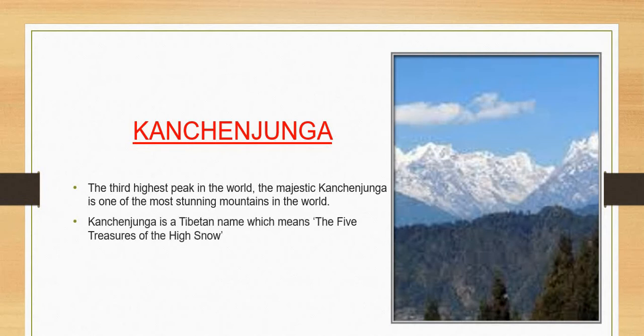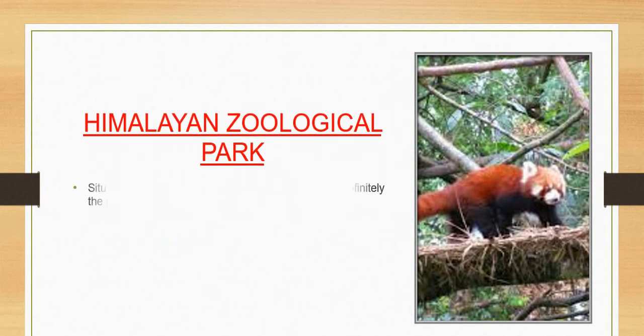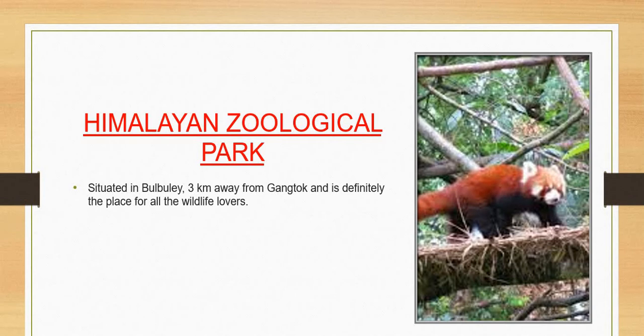Kanchenjunga is the third highest peak in the world. The majestic Kanchenjunga is one of the most stunning mountains in the world. Kanchenjunga is a Tibetan name which means 'the five treasures of the high snow.'